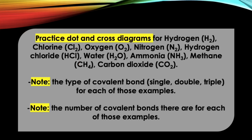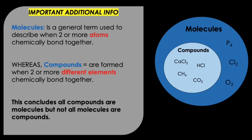The displayed formula for a triple bond is represented as three parallel lines as shown in the diagram. Practice dot and cross diagrams for hydrogen, chlorine, oxygen, nitrogen, hydrogen chloride, water, ammonia, methane, and carbon dioxide. Also be able to name the type of covalent bond as well as the number of covalent bonds for each of those examples.